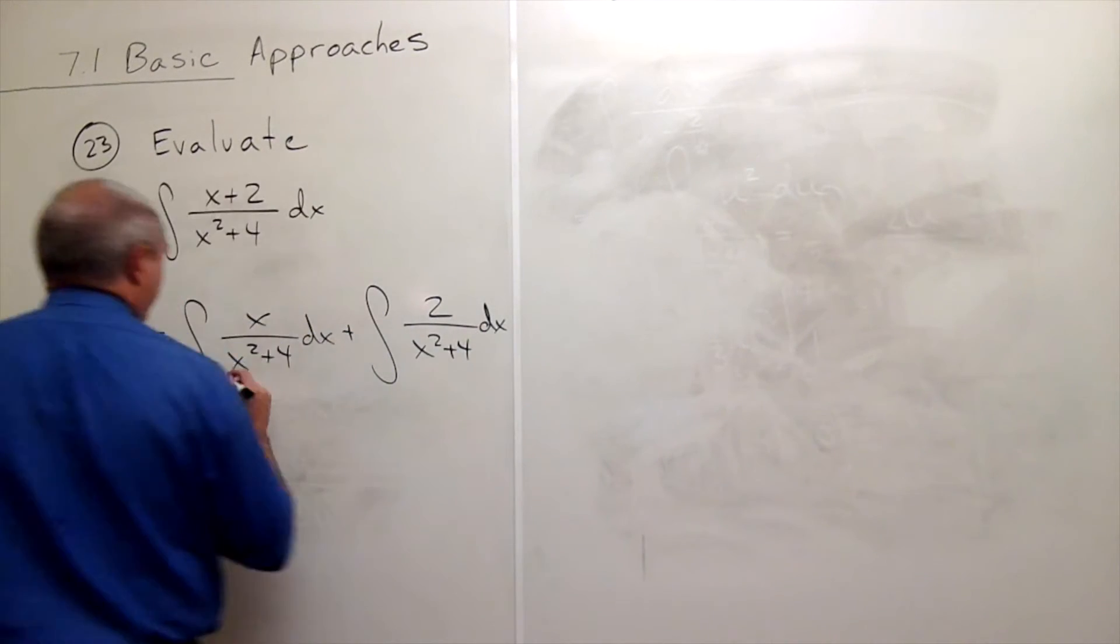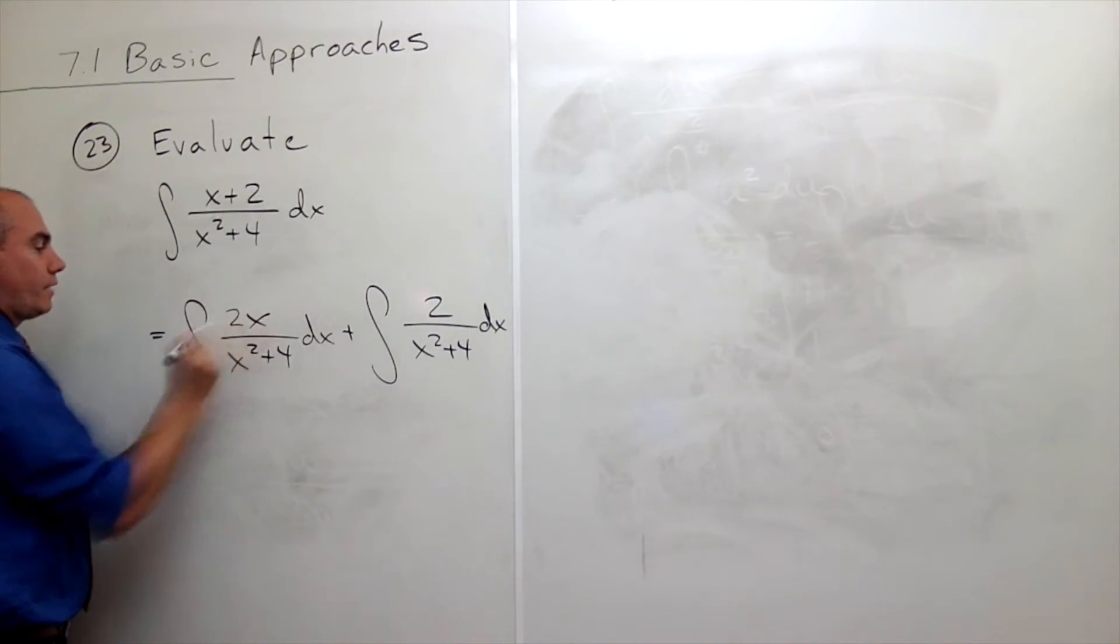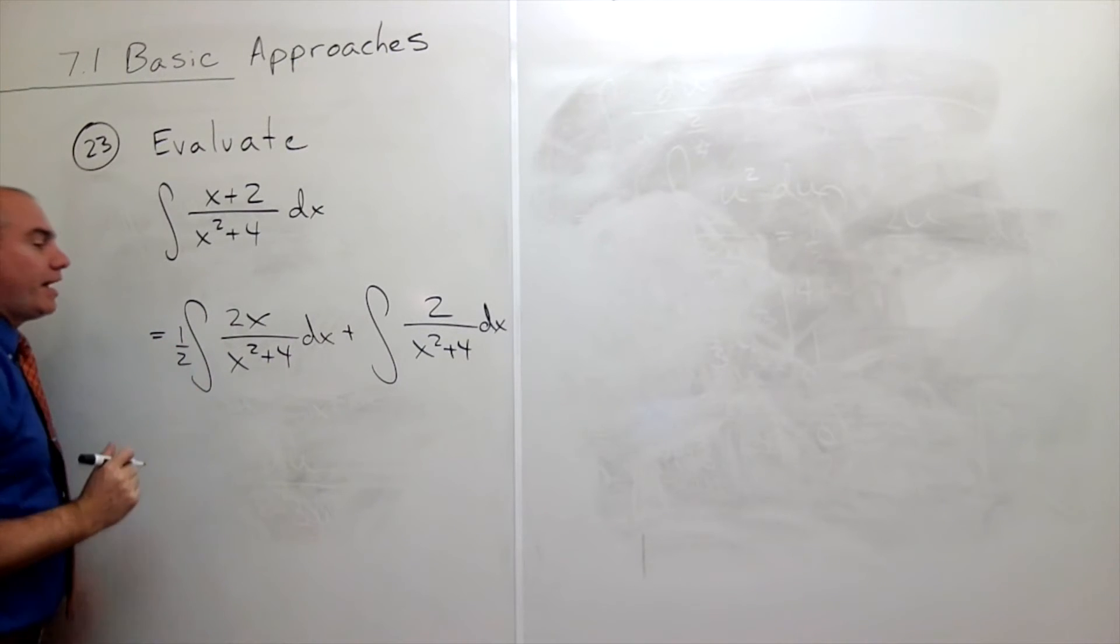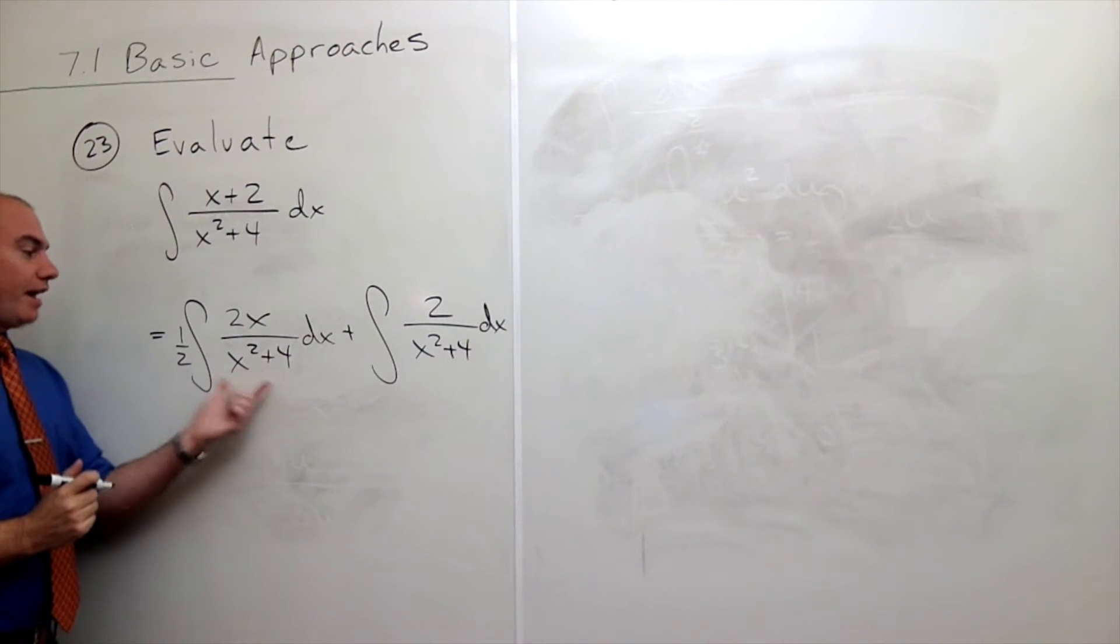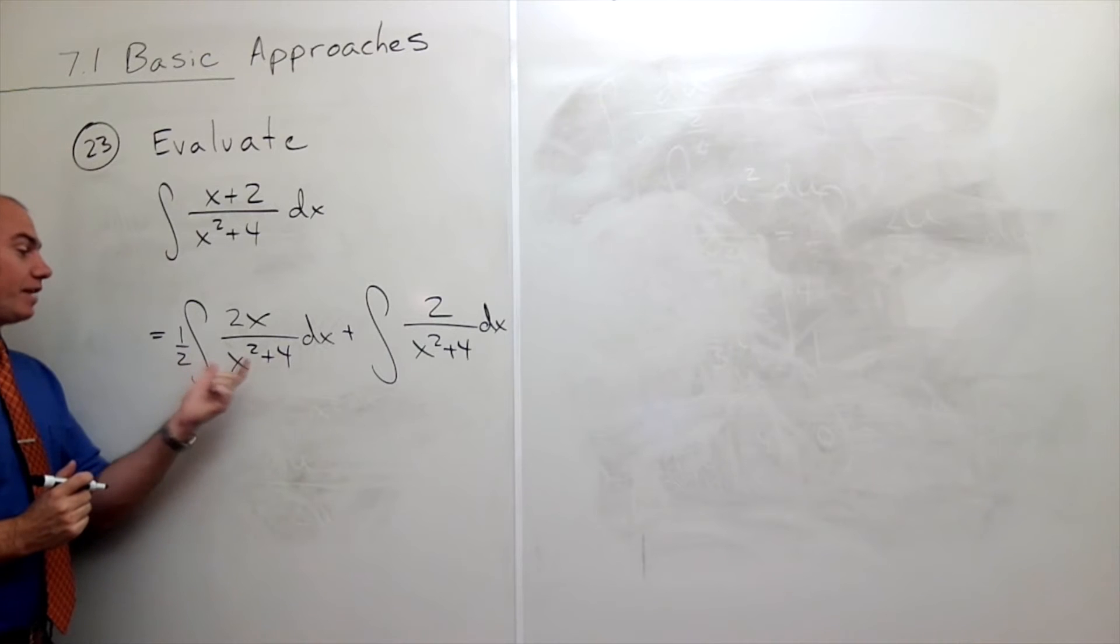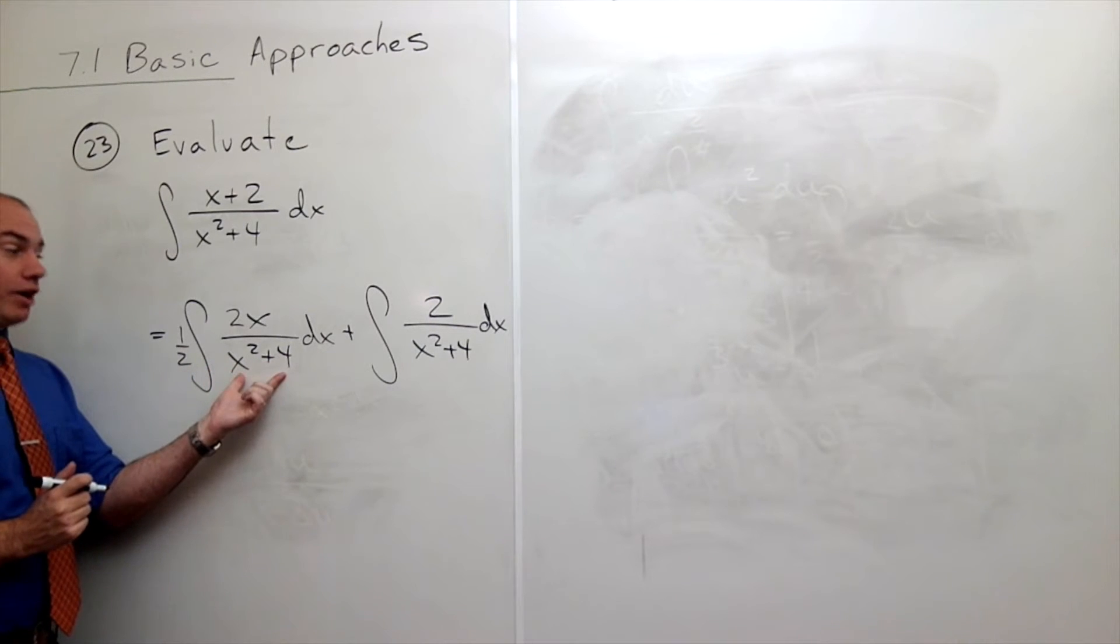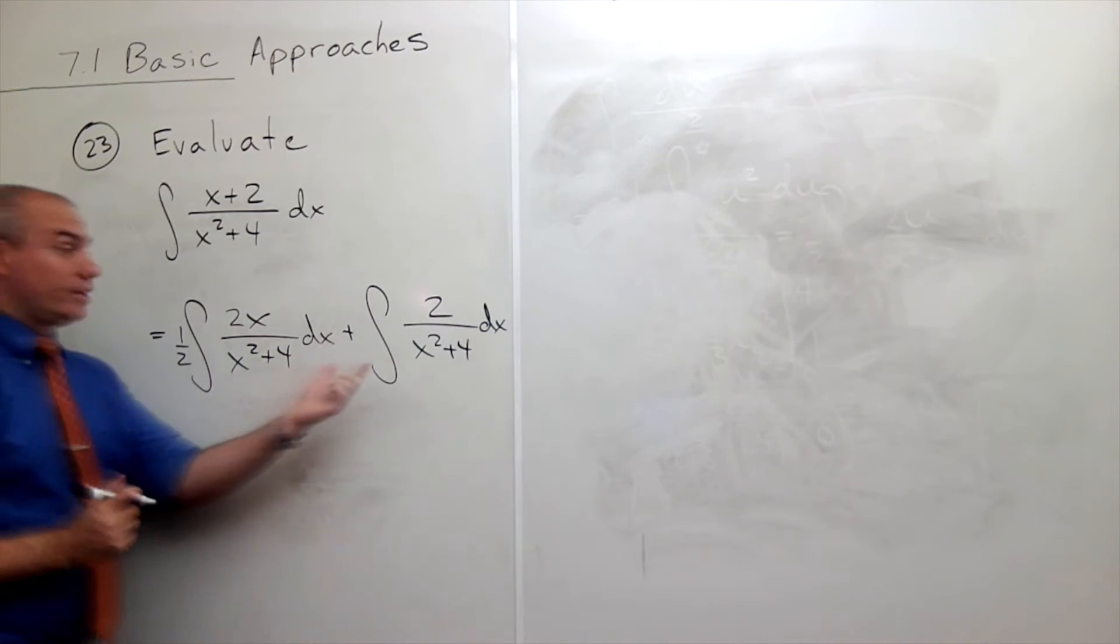So what I'll do is I'll put a 2 up here, put a 1 half right here, and now this is just ln of the bottom, 1 half times ln of absolute value of the bottom and we're done with that one. Let's look at this one.